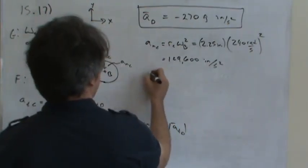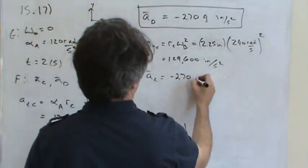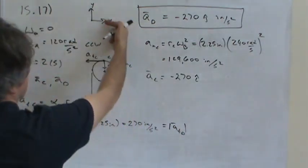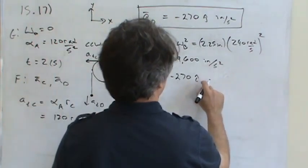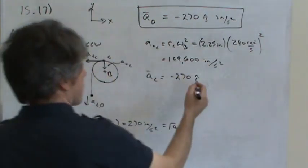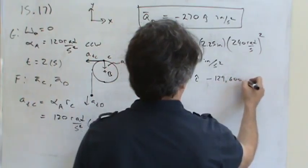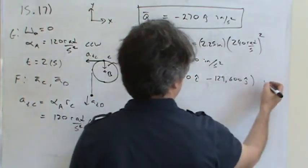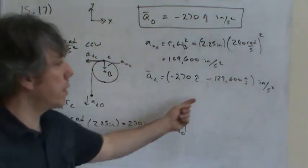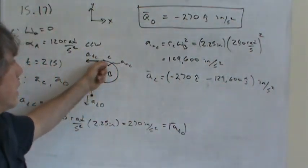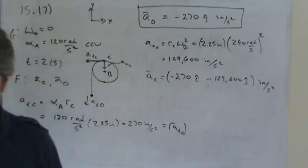And so we can write the total acceleration of point C as negative 270 in the I direction because notice it's against the X coordinate. And then let's see, also it's against the Y coordinate, so minus 129,600 in the J direction. Of course, the units for both of these are inches per second squared. So notice that the primary component of acceleration of point C is the normal component as the point goes around that disk.